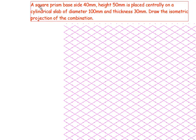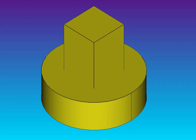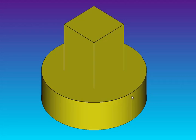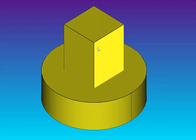Hello students. A square prism base side 40mm, height 50mm, is placed centrally on a cylindrical slab of diameter 100mm. The cylinder thickness is 30mm. I have created a 3D model — this is the cylinder, diameter 100mm, thickness 30mm. Similarly, the square prism side length is 40mm and the height is 50mm.